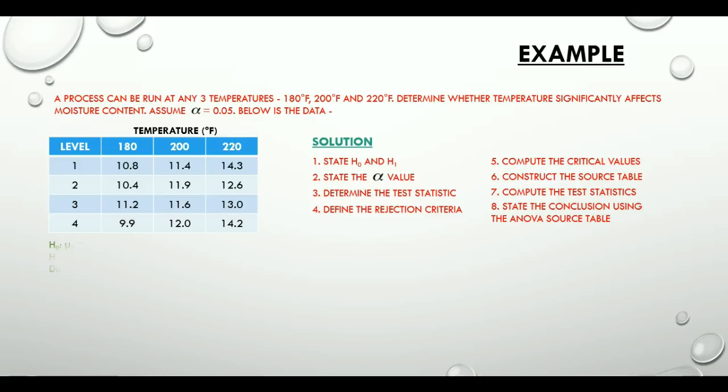Here we have the H0 and H1 that is the null and the alternative hypothesis. The level of significance alpha. F statistic, which is the ratio of the mean squares for between and within treatments.